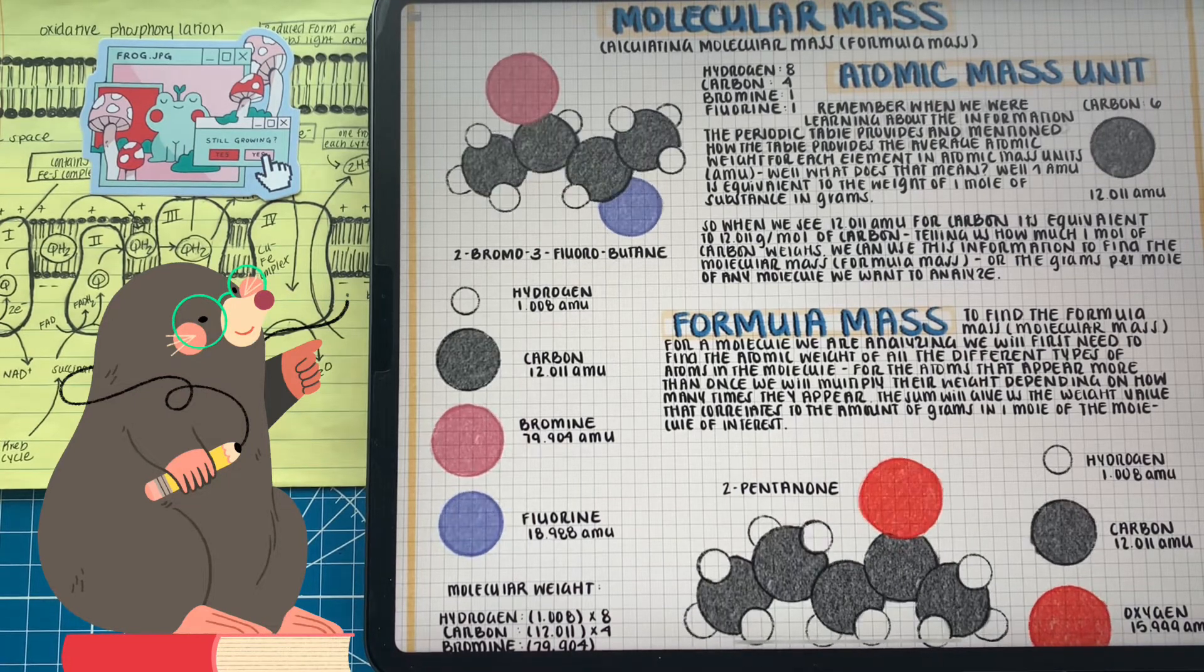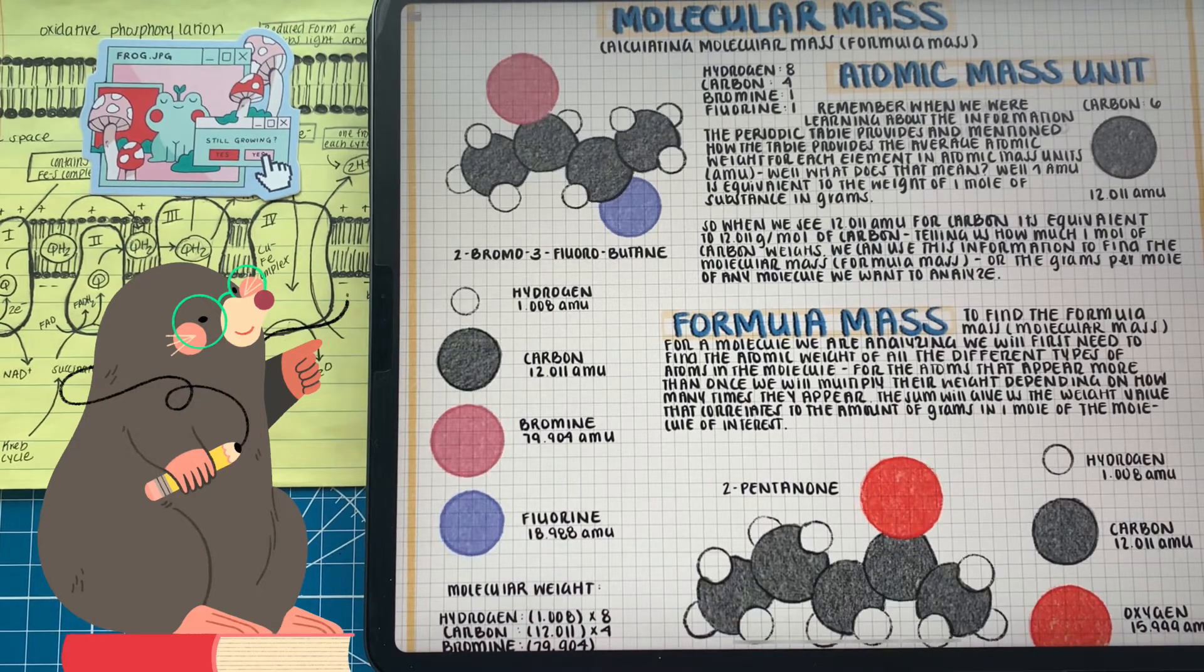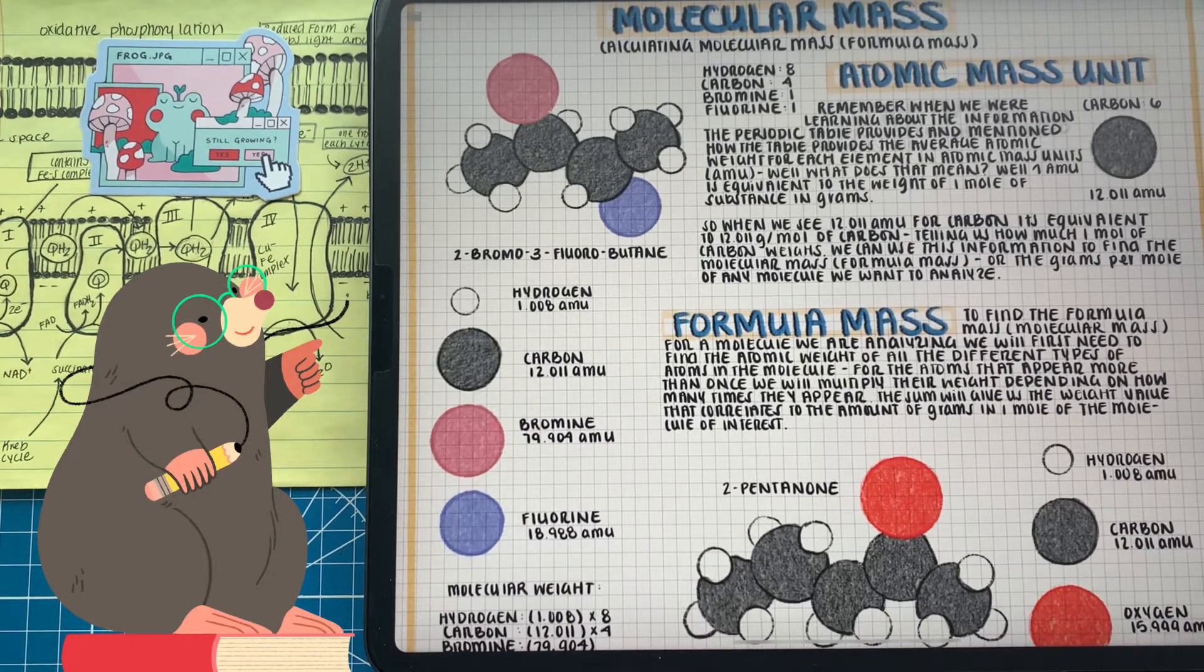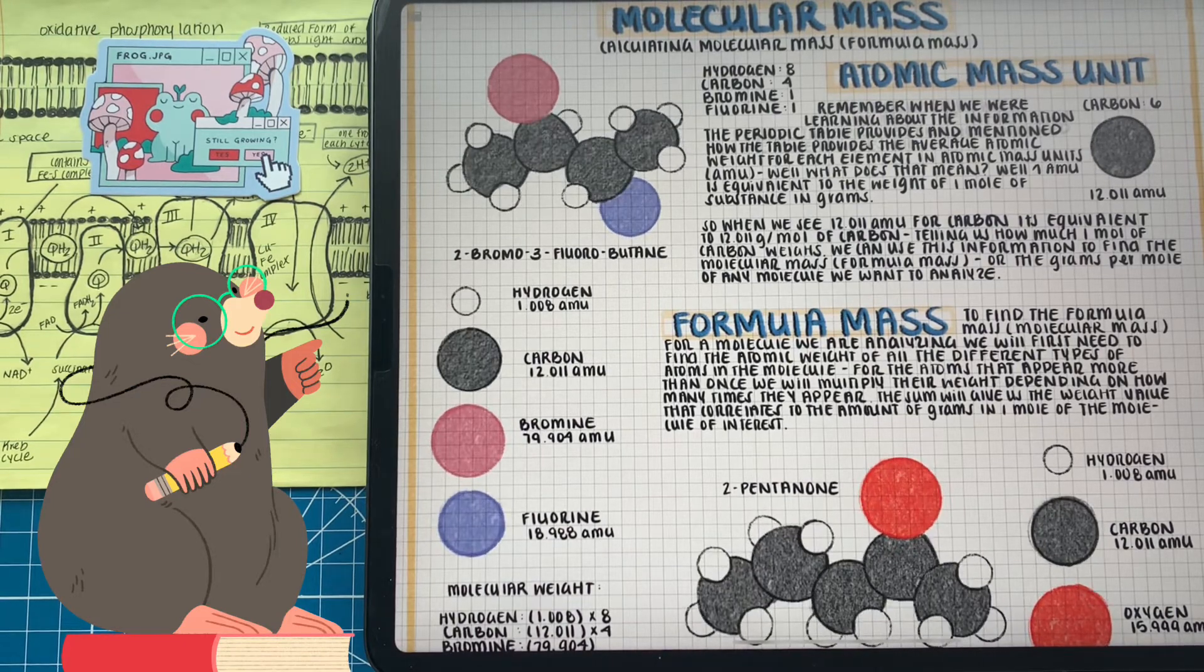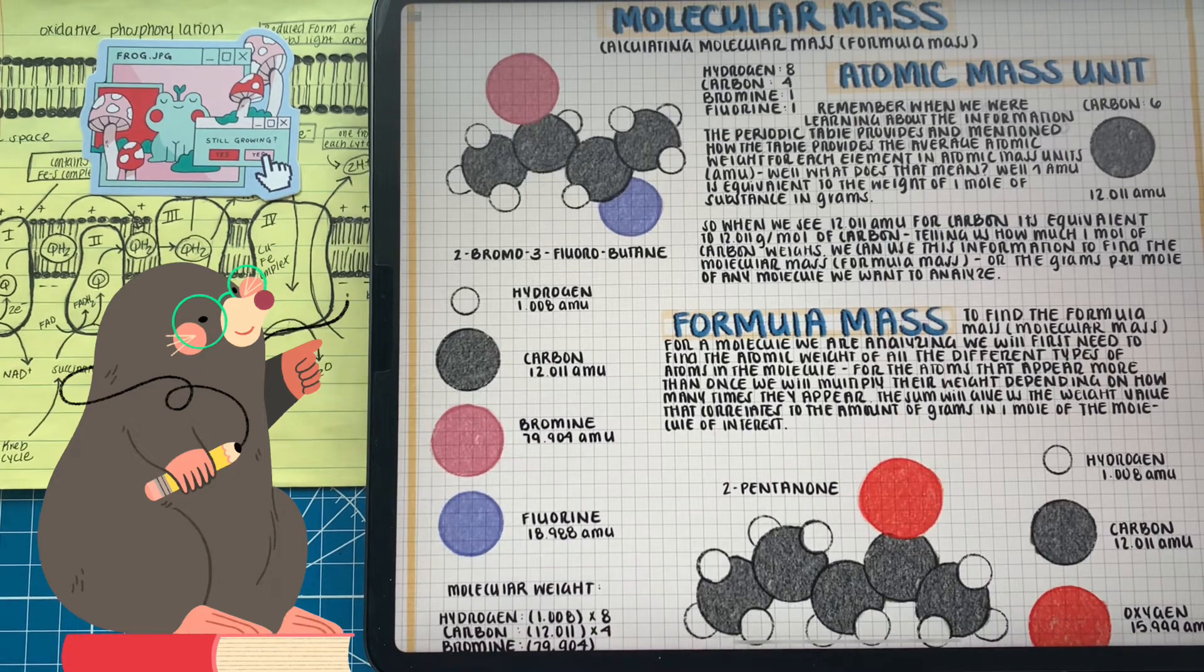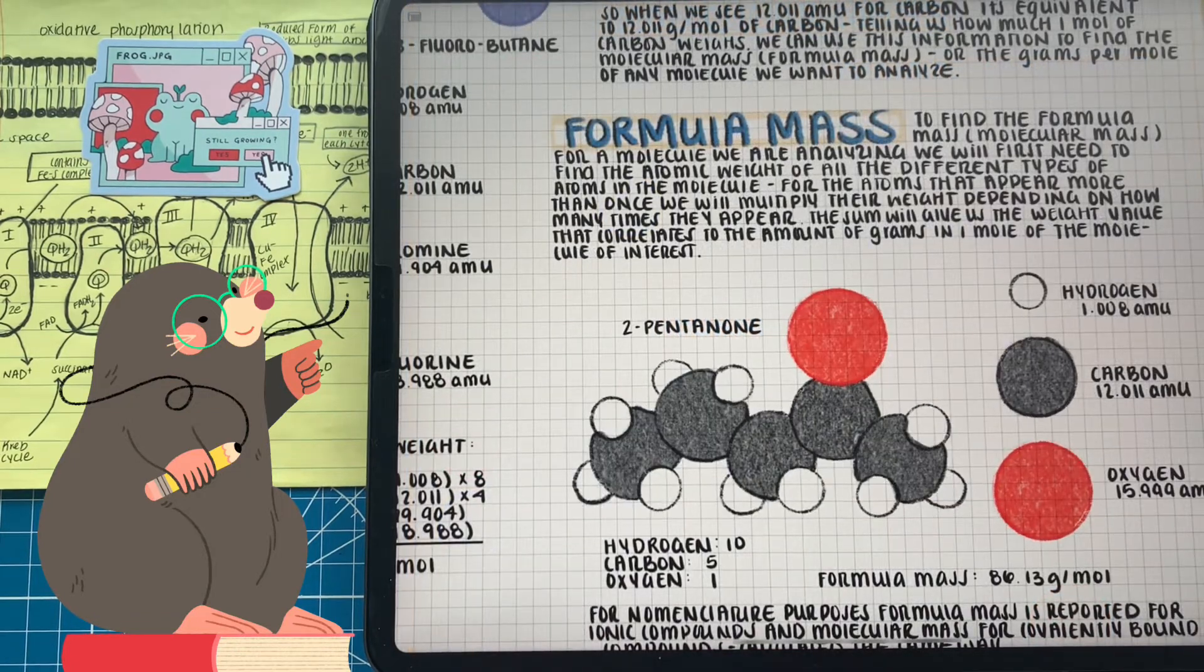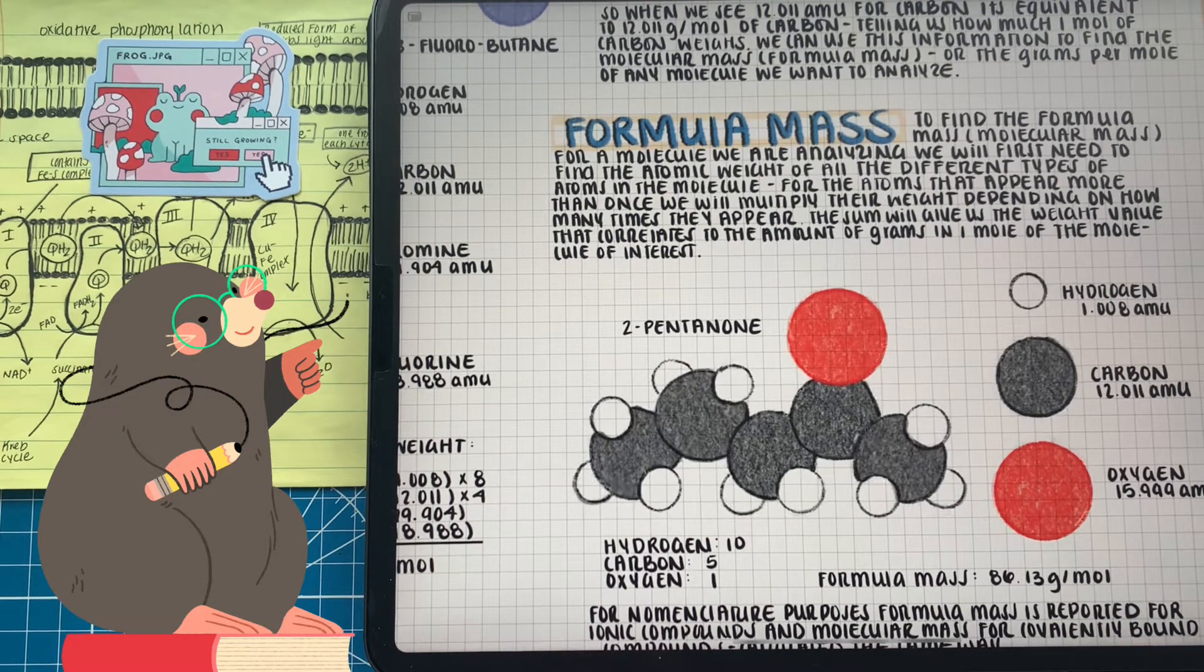So a single mole of carbon weighs about 12 grams. It's actually really handy because if we weigh a sample of gold or copper or sodium, based off the weight we can learn how many moles are in that sample. But there's another problem - not everything is just elements. We know that these elements come together to form molecules. So how can we find the same relationship, the grams per mole that we have for atoms but for molecules? That's where we talk about finding the molecular weight.